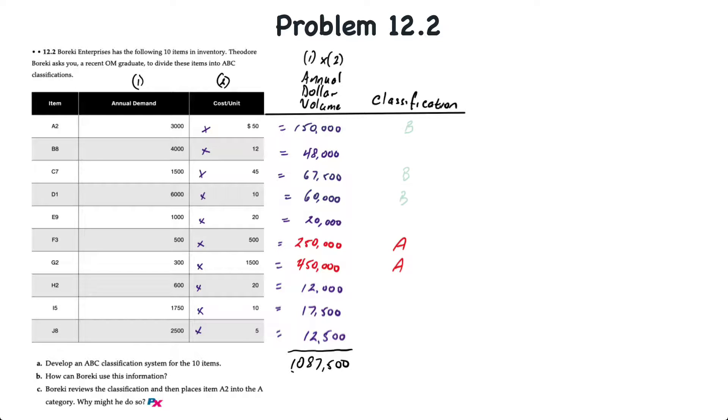Next, we want to find B-level items. If we said that A2 is a B-level item, then we want to look for the next highest annual dollar volume. We can see that there is a large gap between A2 and the next highest, which would be C7 at $67,500 and D1 at $60,000. And then after that, the next highest annual dollar volume is B8 at $48,000, which is quite a gap. So what we'll do is we'll take A2, C7, and D1 and classify those as B-level inventory.